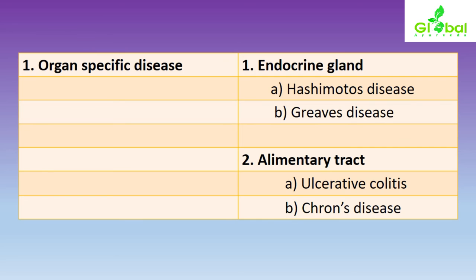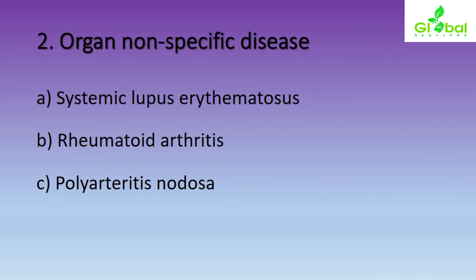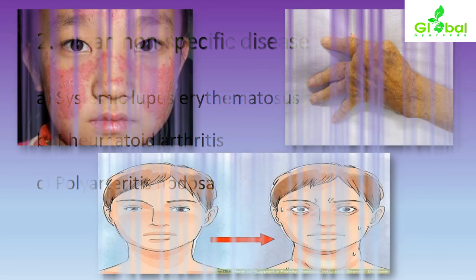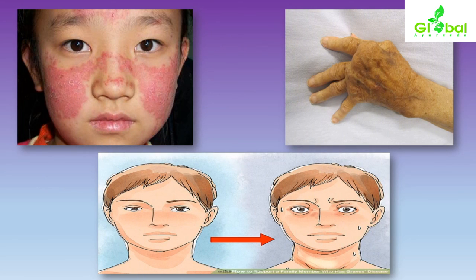Examples of organ-specific diseases related to endocrine glands include Hashimoto's disease and Graves' disease, which we have already seen in thyroid disorders. For the alimentary tract, examples include ulcerative colitis and Crohn's disease. Examples of organ-non-specific systemic diseases include systemic lupus erythematosus, rheumatoid arthritis, and polyarteritis nodosa. Pictorial representations of these autoantibody conditions — SLE, rheumatoid arthritis, and polyarteritis nodosa — show their clinical presentations.